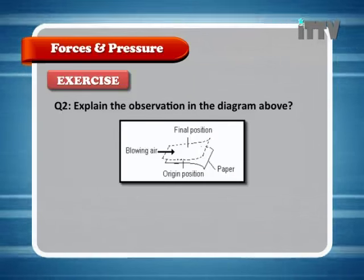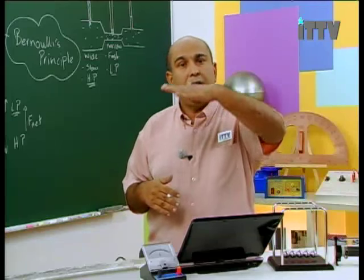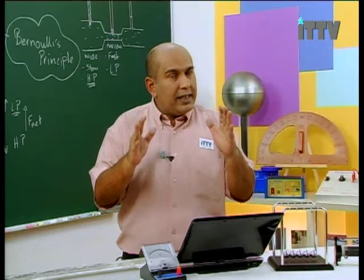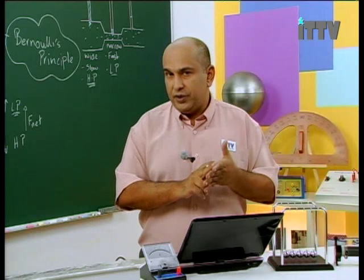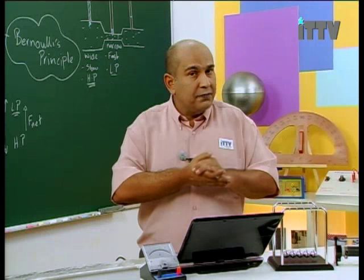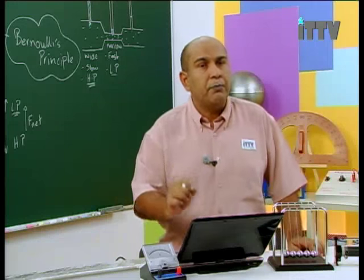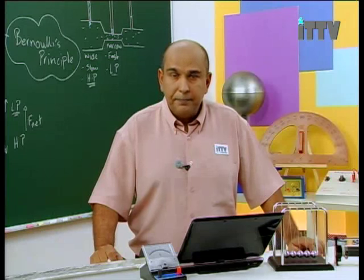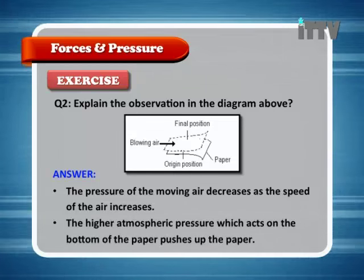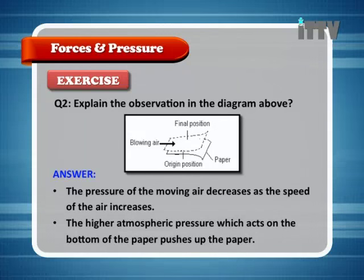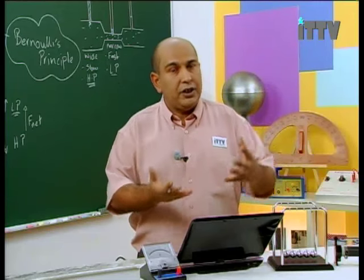Next question: Explain the observation in the diagram above — the diagram showing paper where air is blown over the top and the paper moves upwards. Key points: where is it fast, what type of pressure; where is it slow, what type of pressure; mention the pressure difference, the resultant force, and finally the effect. Answer: The pressure of the moving air decreases as the speed of the air increases. The higher atmospheric pressure acting on the bottom of the paper pushes the paper up. Fast above — low pressure; underneath — higher pressure; pushes the paper up.